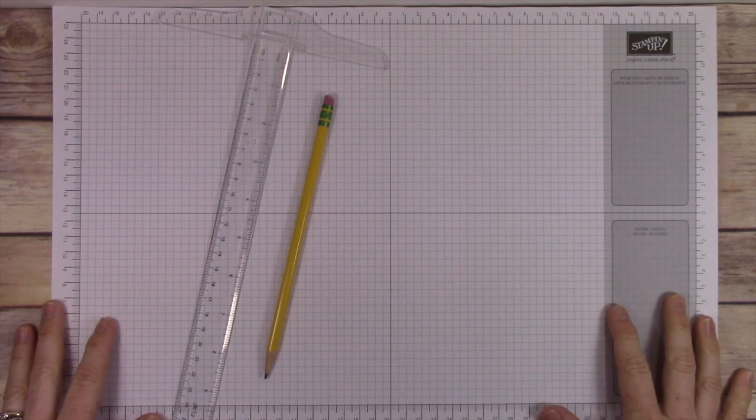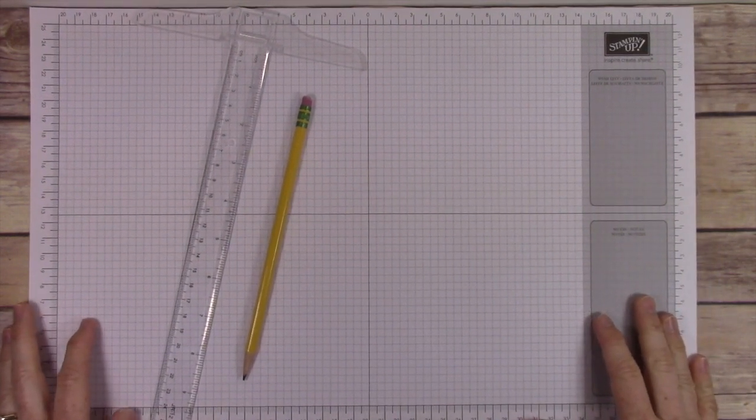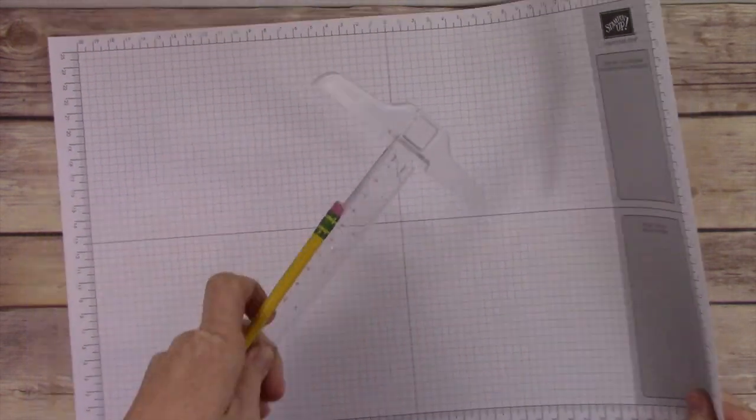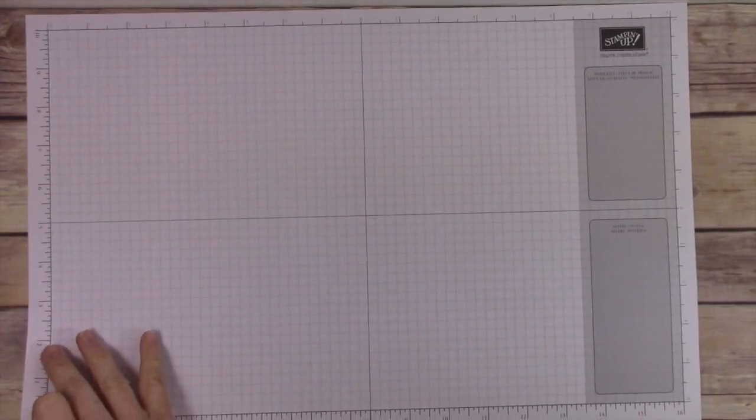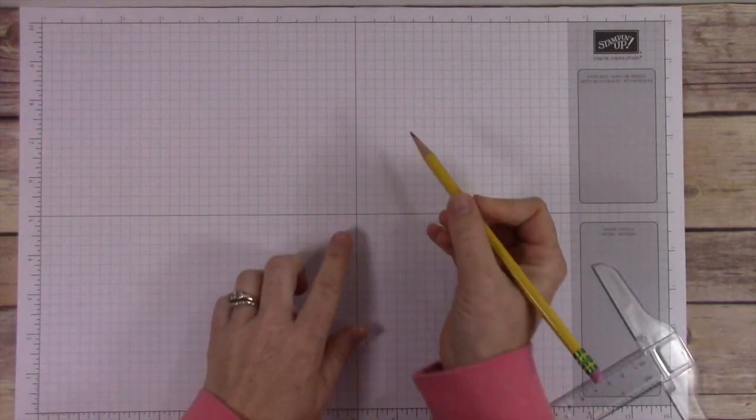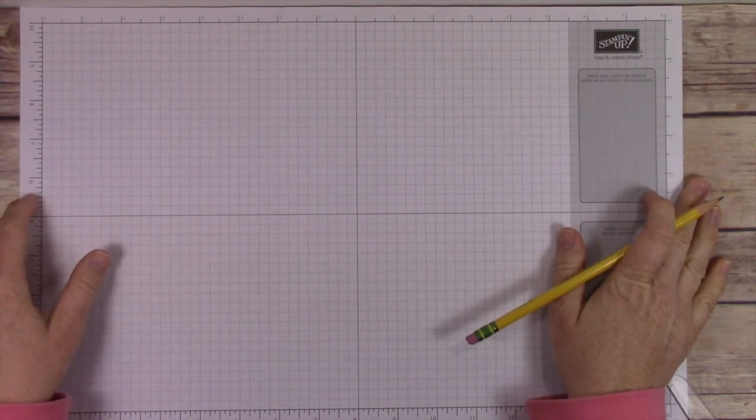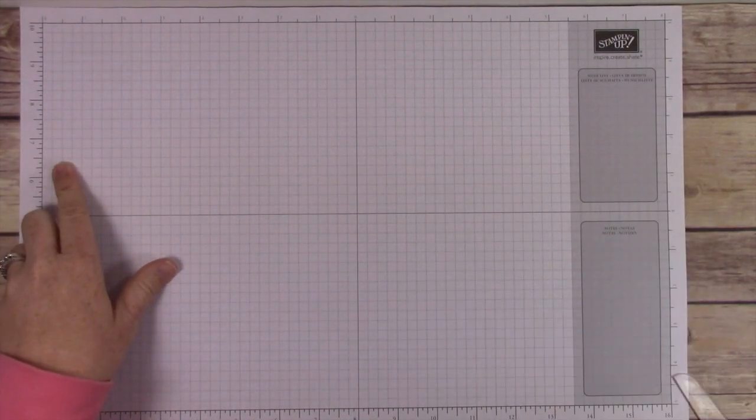We're going to get started. I'm going to show you how to do this. You just have to measure up from the bottom to seven and a quarter inches and you're going to put a little dot there. I had to turn my paper over because the inches were on the other side.